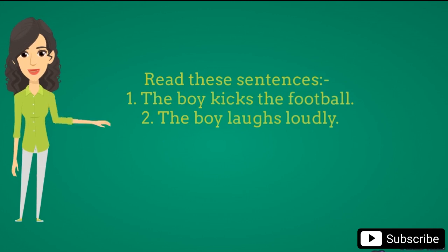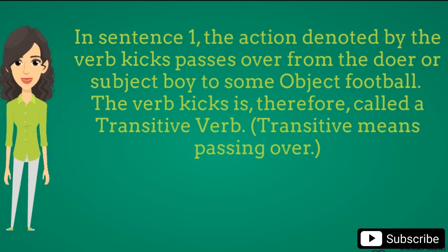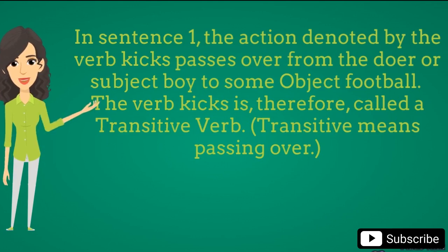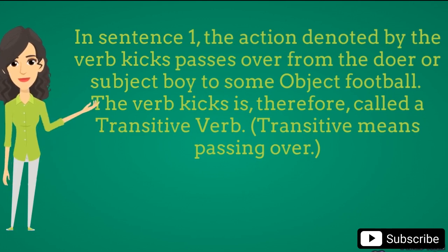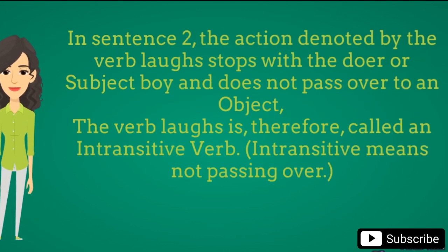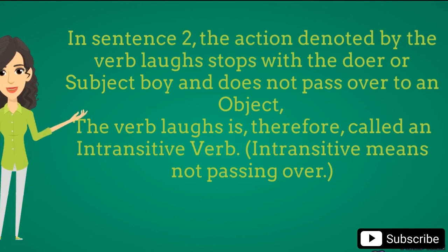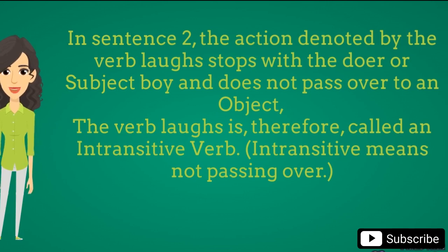Read these sentences: The boy kicks the football. The boy laughs loudly. In sentence 1, the action denoted by the verb kicks passes over from the doer or subject boy to some object, football. The verb kicks is therefore called a transitive verb — transitive means passing over. In sentence 2, the action denoted by the verb laughs stops with the doer or subject boy and does not pass over to an object. The verb laughs is therefore called an intransitive verb — intransitive means not passing over.